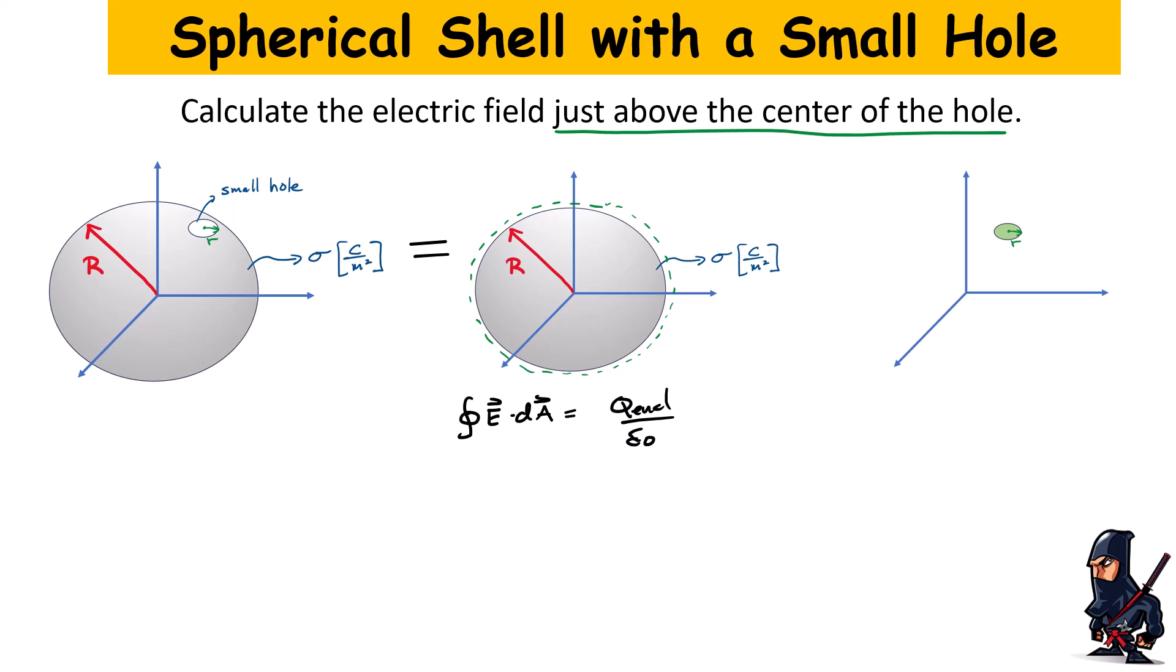Now, by exploiting the symmetry of this object, we know that the left hand side of Gauss's law is simply the electric field, which is going to be uniform, multiplied by the area of that sphere, which is four pi r squared. Now how much charge is enclosed? Well, it's that charge density multiplied by the exact same area, the four pi r squared. That's the area of that shell divided by epsilon zero. That's it.